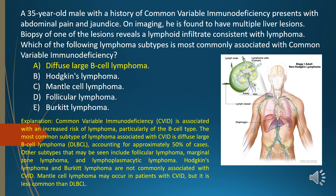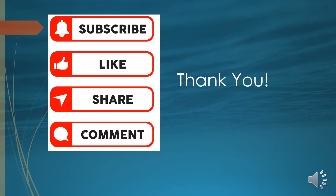Common variable immunodeficiency (CVID) is associated with an increased risk of lymphoma, particularly of the B-cell type. The most common subtype of lymphoma associated with CVID is diffuse large B-cell lymphoma (DLBCL), accounting for approximately 50% of cases. Other subtypes include follicular lymphoma, marginal zone lymphoma, and lymphoplasmacytic lymphoma. Hodgkin's lymphoma and Burkitt's lymphoma are not commonly associated with CVID. Mantle cell lymphoma may occur but is less common than DLBCL.